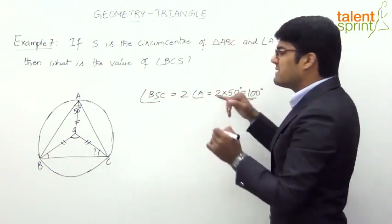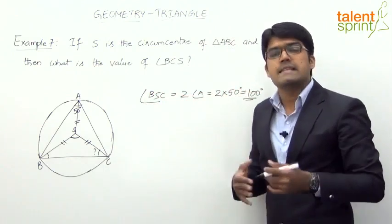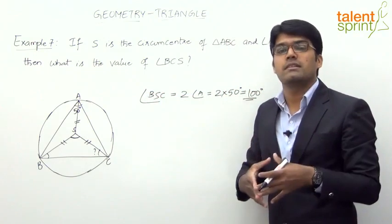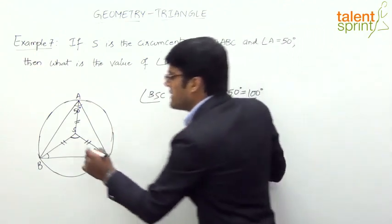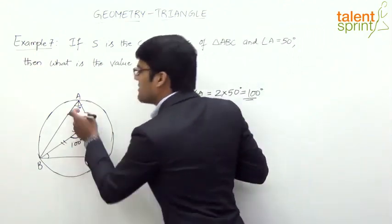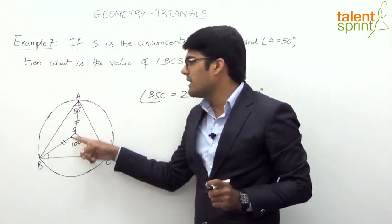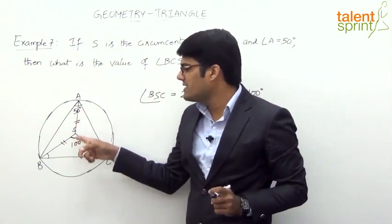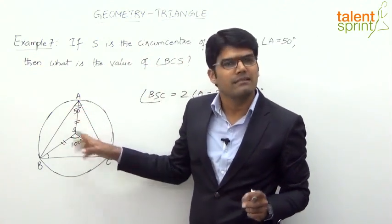In the exam, you can directly apply this: the central angle is always twice the inscribed angle. For example, if angle A is 60°, angle BSC would be 120°; if angle A is 45°, angle BSC would be 90°; if angle A is 40°, angle BSC would be 80°. As simple as that.